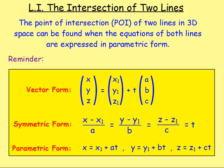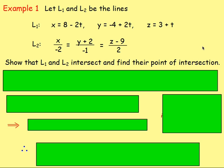Let's look at an example. Let L1 and L2 be two lines. Line 1 is given as x = 8 − 2t, y = −4 + 2t, z = 3 + t — that's parametric form. Line 2 is given as x/(−2) = (y + 2)/(−1) = (z − 9)/2 — that's symmetric form. We have to show that L1 and L2 intersect and find the point of intersection.